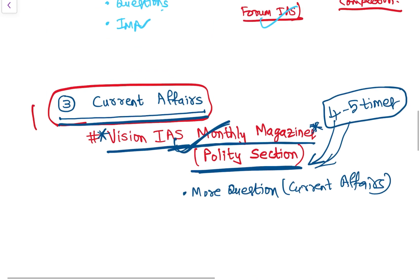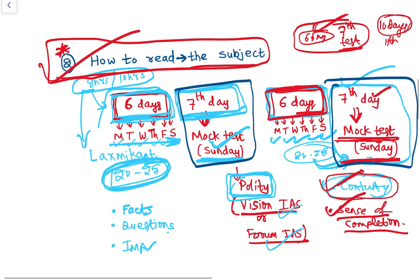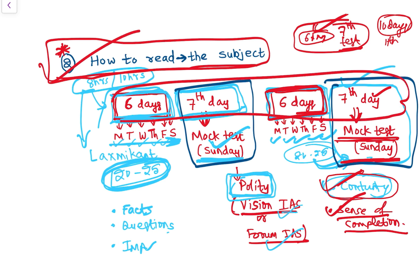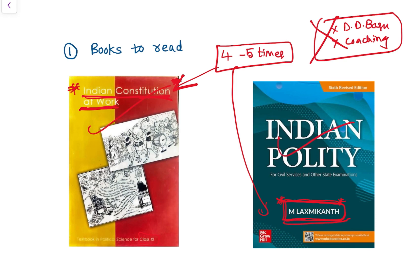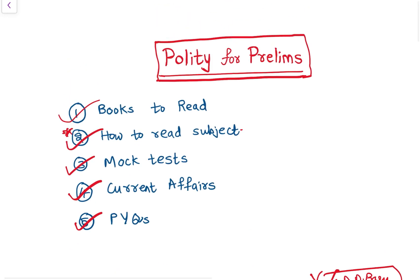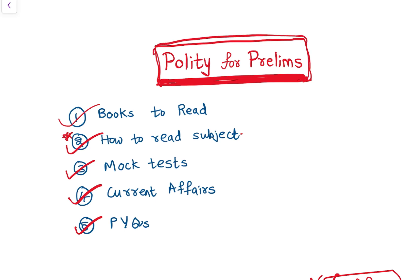For current affairs, stick to one or two sources and read them multiple times. For reading the subject, follow the six-day continuous reading approach. Come back to Lakshmikant and the NCERT — these two books are sufficient. Once you read these two books, there is no need to read any other books. That's it for today's video. I hope you got clarity on polity preparation for prelims. If you want videos on other subjects, comment in the comment section. Thank you very much, see you next time.